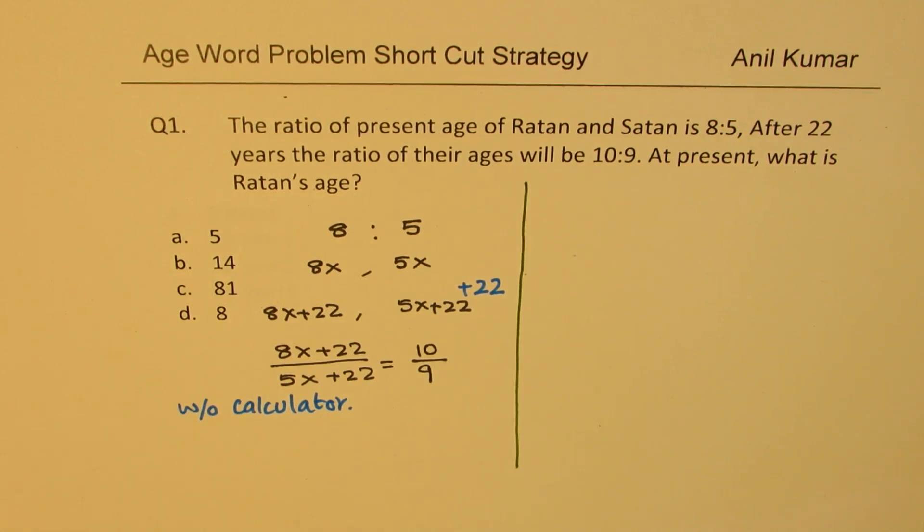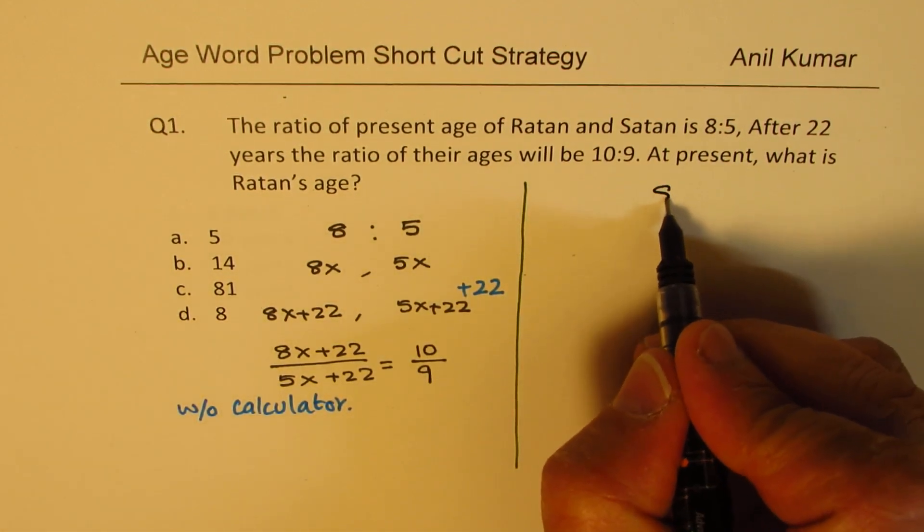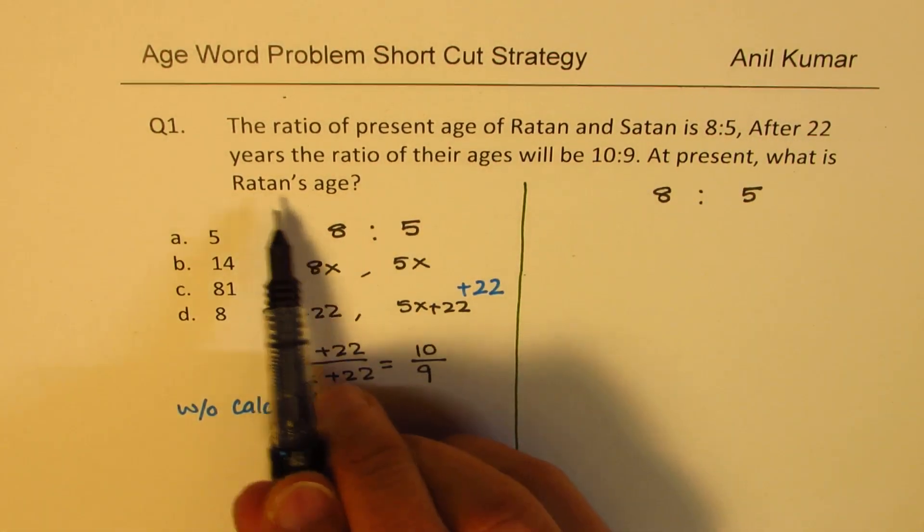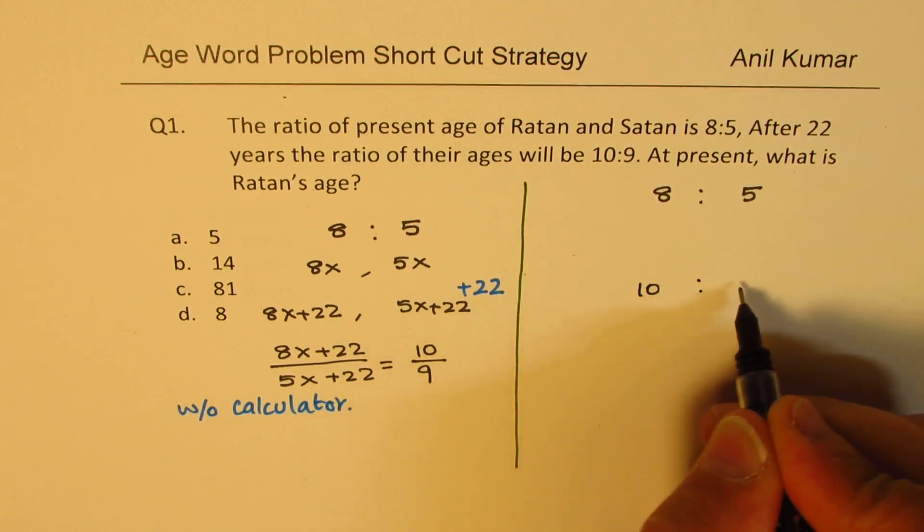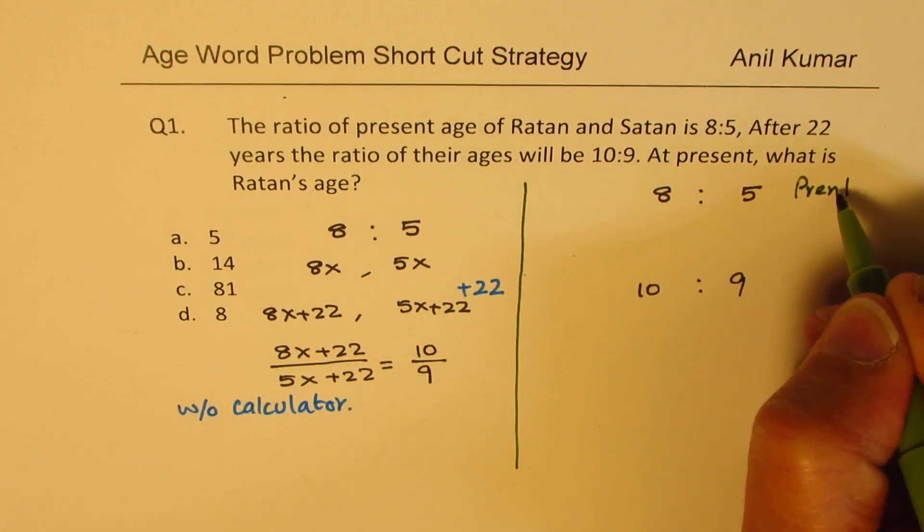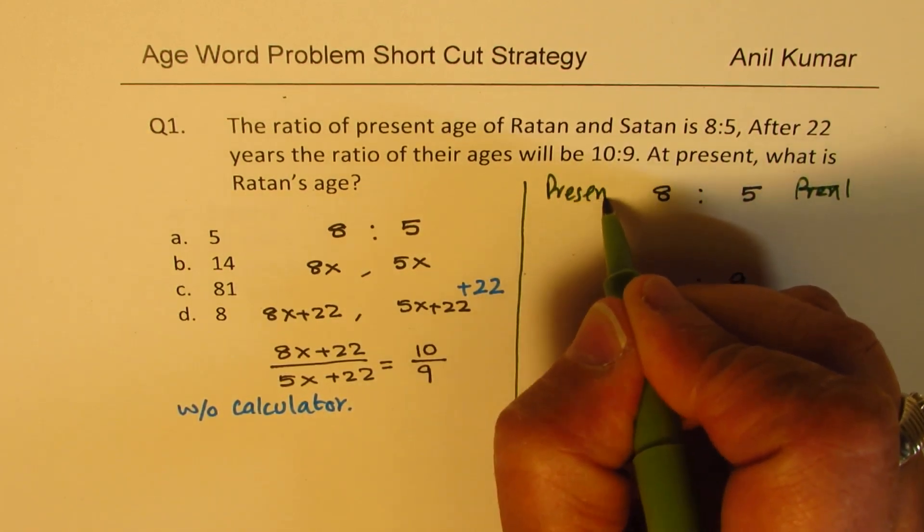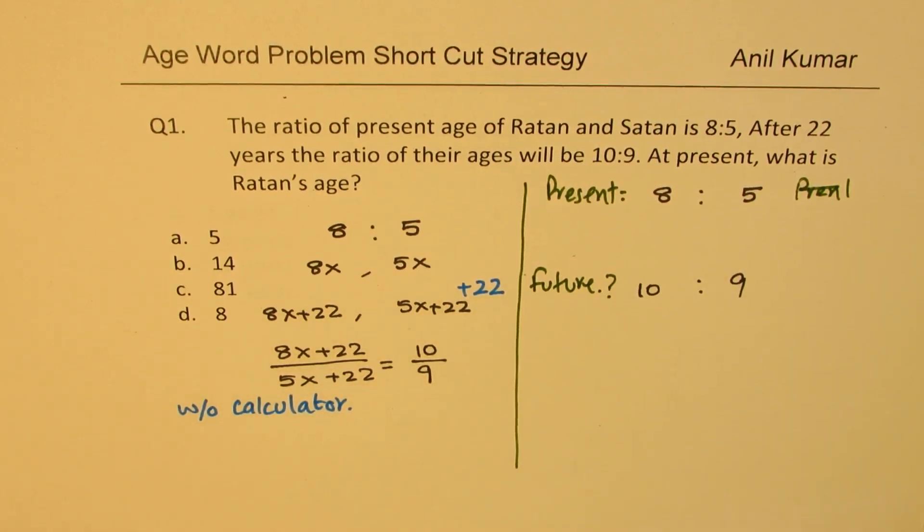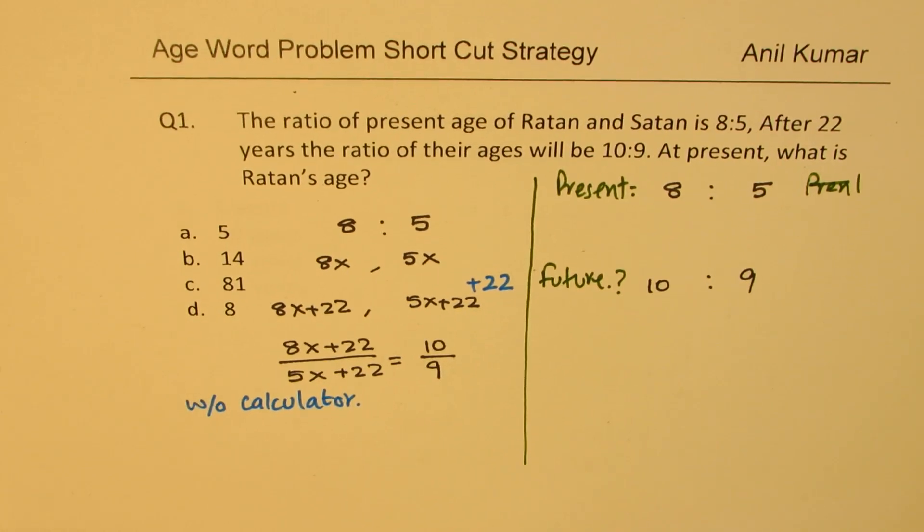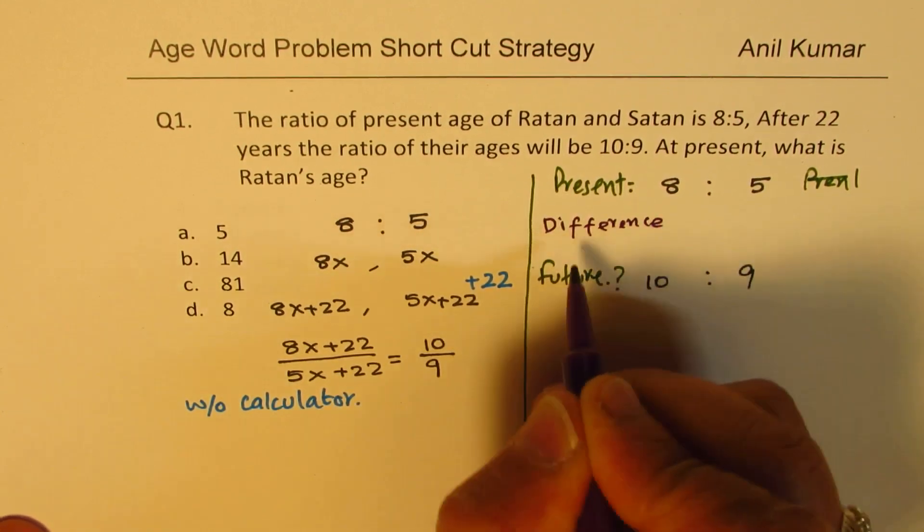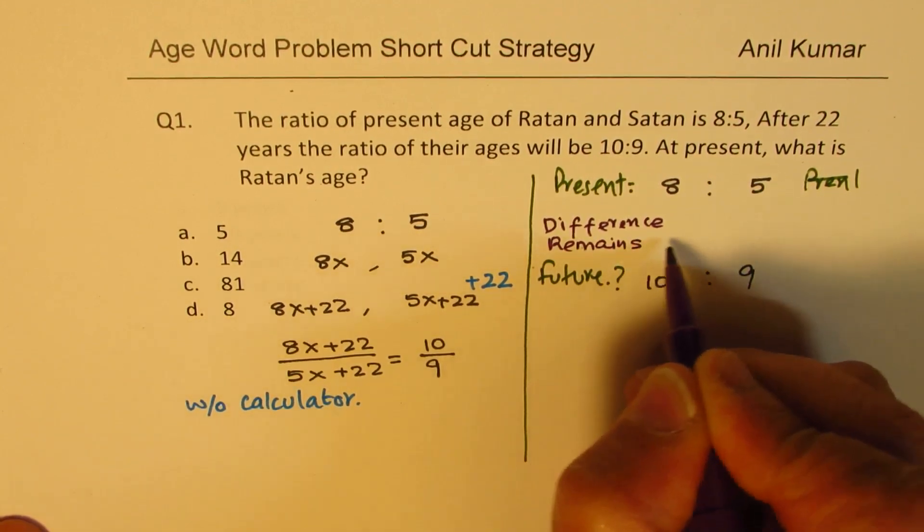What actually we are given? We are given that the ratio of present age of Ratan and Satan is 8 is to 5. So it is a ratio question. After 22 years and all, let's forget about it. But when will the ratio be 10 is to 9? We are saying present ratio is 8 to 5. In future, after 22 years, the ratio will be 10 is to 9. But important thing to note here is that the difference in age, will it ever change? It always remains same.